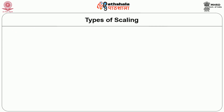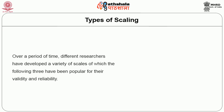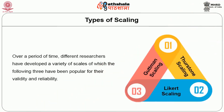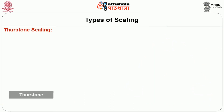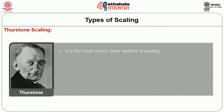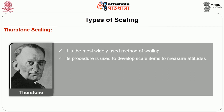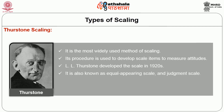Over a period of time, different researchers have developed a variety of scales, of which three are popular for their validity and reliability: Thurston Scaling, Likert Scaling, and Guttman Scaling. Let us look at Thurston Scaling first. It is the most widely used method of scaling and its procedure is used to develop scale items to measure attitudes. It was developed by L.L. Thurston in the 1920s, and is also known as the Equal Appearing Scale and Judgment Scale. It is a unidimensional scale because it measures aggregate attitude towards a specific issue.